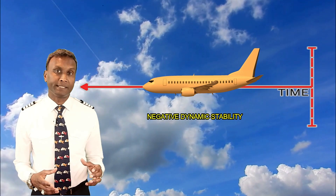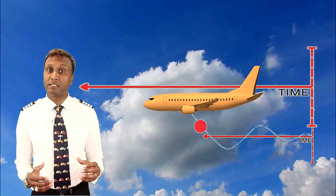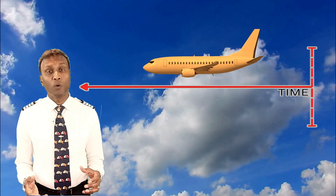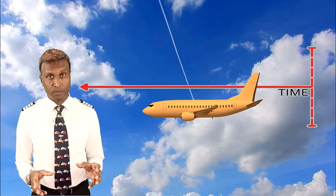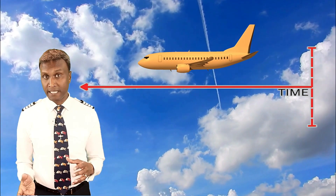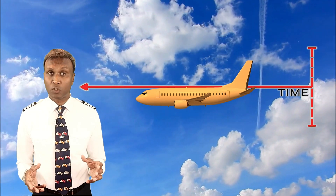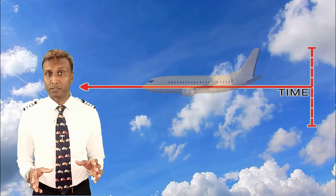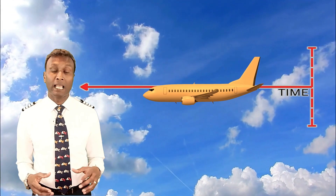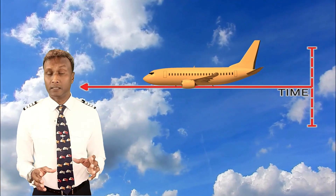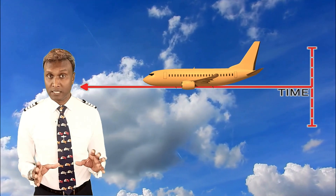Negative dynamic stability occurs when an aircraft tends to diverge from its original state of equilibrium after being disturbed, with amplifying oscillations. The aircraft's response amplifies rather than mitigates the deviation, leading to potentially unstable flight conditions characterized by persistent oscillations. Negative dynamic stability poses significant challenges for pilots, as they must actively intervene to dampen oscillations and regain control. This type of instability requires careful management and correction to ensure safe flight operations.